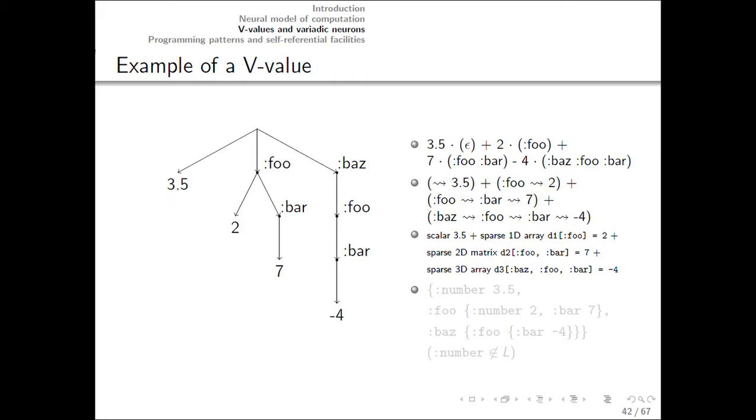Now we are going to talk about thinking about this as mixed rank tensors. It is a scalar 3.5, and a sparse one-dimensional array with the element labeled by foo and the value 2, and a sparse column labeled bar that is equal to 7. And there is also a three-dimensional sparse array with one element non-zero. So altogether it's a sparse array of mixed number of dimensions. Since machine learning nowadays tends to call multi-dimensional arrays tensors, we can think about this as tensors of mixed rank.